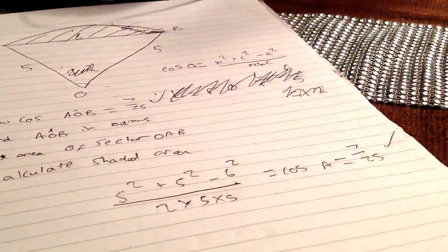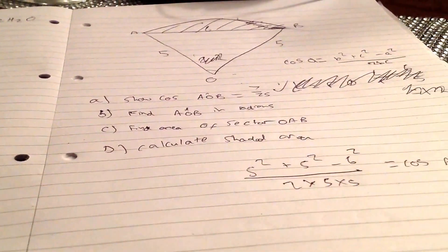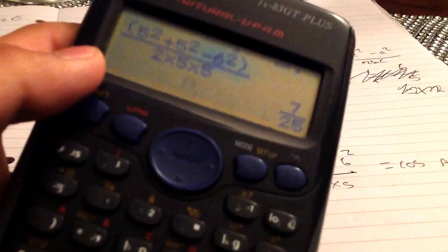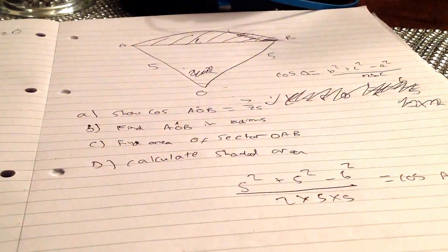Part B: find AOB in radians. Now what we need to do is convert this into degrees. If you can see here, that's what we've got, so we need to do cos to the minus 1 of that.